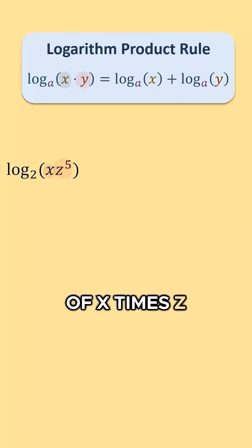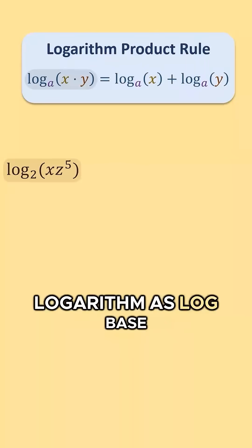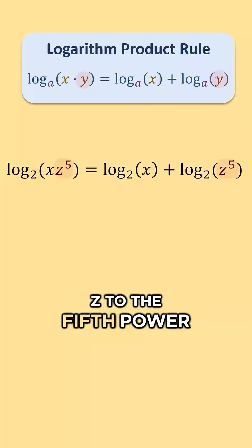I have a product of x times z to the fifth power. I can rewrite this single logarithm as log base 2 of x, the first expression, plus log base 2 of z to the fifth power, the second expression.